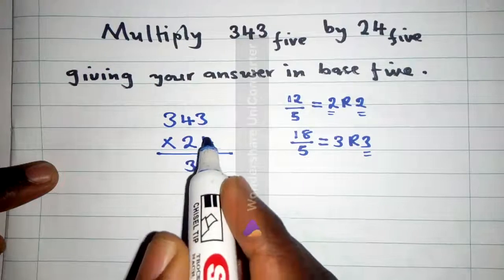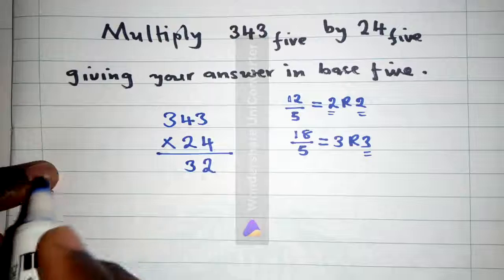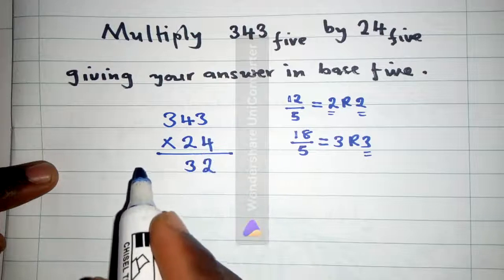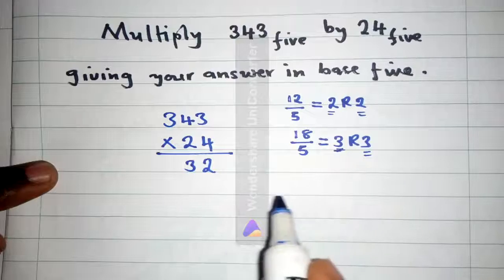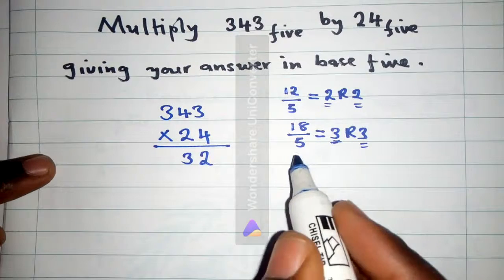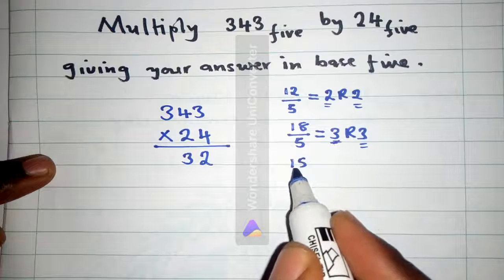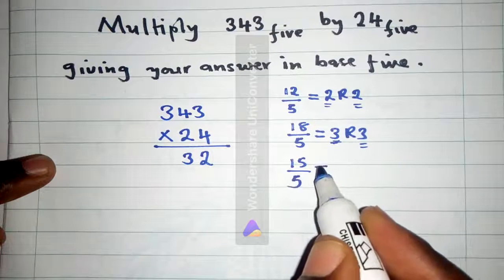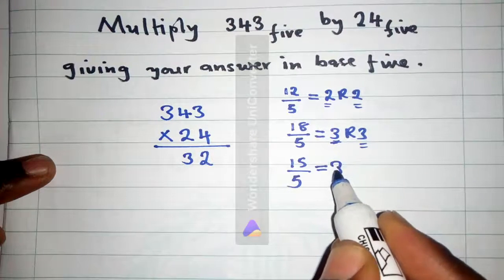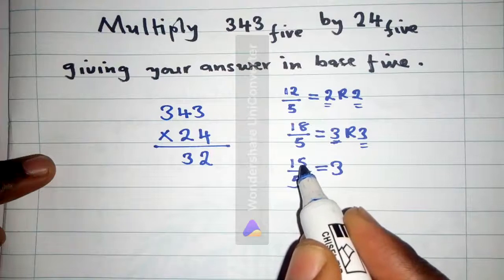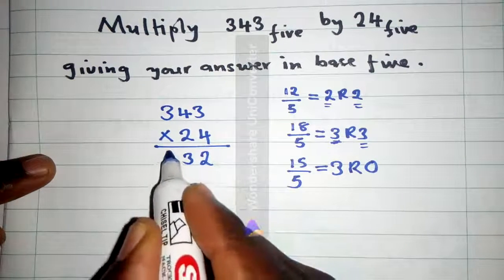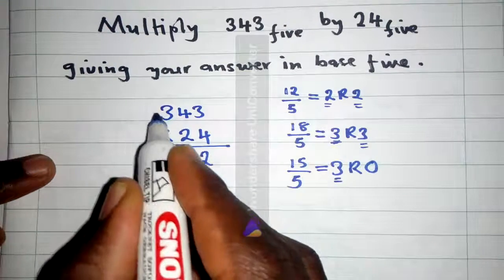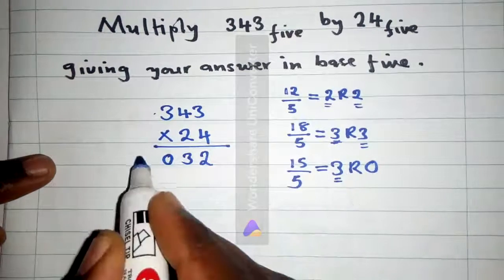Get this 3 and write it here. Then we say 4 times 3 is 12. 12 plus these 3 here is 15. We cannot write 15 here, put it here, and then say 15 divided by 5 is 3. 5 can go into 15 three times and the remainder will be 0. So write 0, and this 3, since numbers are finished here to multiply with, you can write it here.